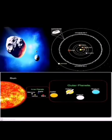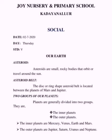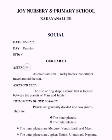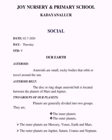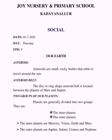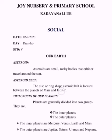I think you all understand about asteroids, asteroid belt, and the 2 groups of our planets. Now all of you take your social note. Start to write today's date. After that, write our topic name. Put the side heading: Asteroid. And write: Asteroids are small rocky bodies that orbit or travel around the sun. Asteroid belt: The disc or ring shape asteroid belt is located between the planets of Mars and Jupiter.